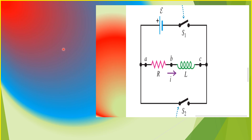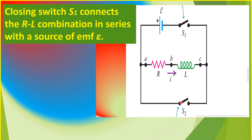A typical RL circuit is one where a resistor and a coil or inductor are connected in series to a source of EMF such as a battery, as shown in the diagram. At the start, or at time t equals zero, the two switches S1 and S2 are open. In closing switch S1, the current increases from zero to a maximum value. The presence of the inductor will slow the growth of the current. As explained in episode 1, the rate of increase of current causes a self-induced EMF in the coil, thereby storing magnetic energy in the inductor.